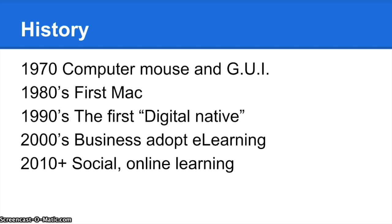In 1970, the computer mouse was created, and GUI, helping to define modern computing. In the 1980s, the first Mac was created. The personal computer era begins with Macintosh. Online communities begin sharing information, slowly paving the way toward e-learning. In the 1990s, the first digital natives are born. Email takes off. It's the dawn of a new era in learning. Virtual learning environments begin, and e-learning becomes a widely recognized term.